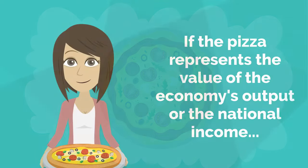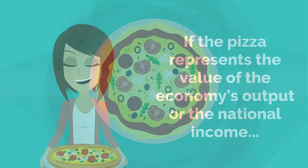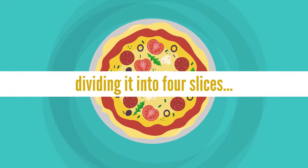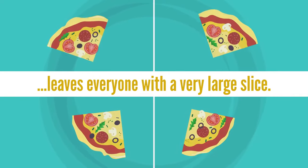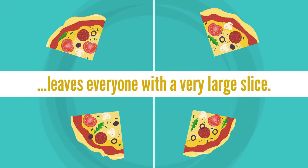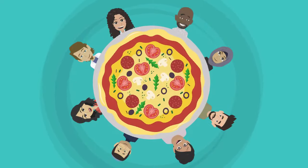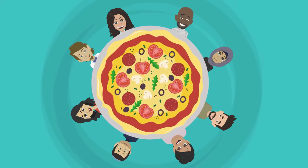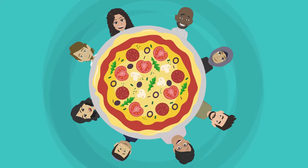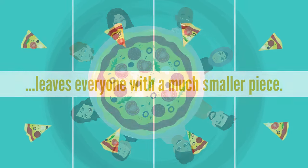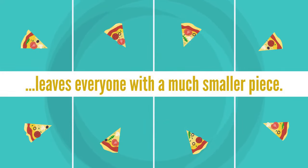If the pizza represents the value of the economy's output, or the national income, dividing it into four slices leaves everyone with a very large slice. Taking another identical pizza and dividing it among eight people leaves everyone with a much smaller piece.